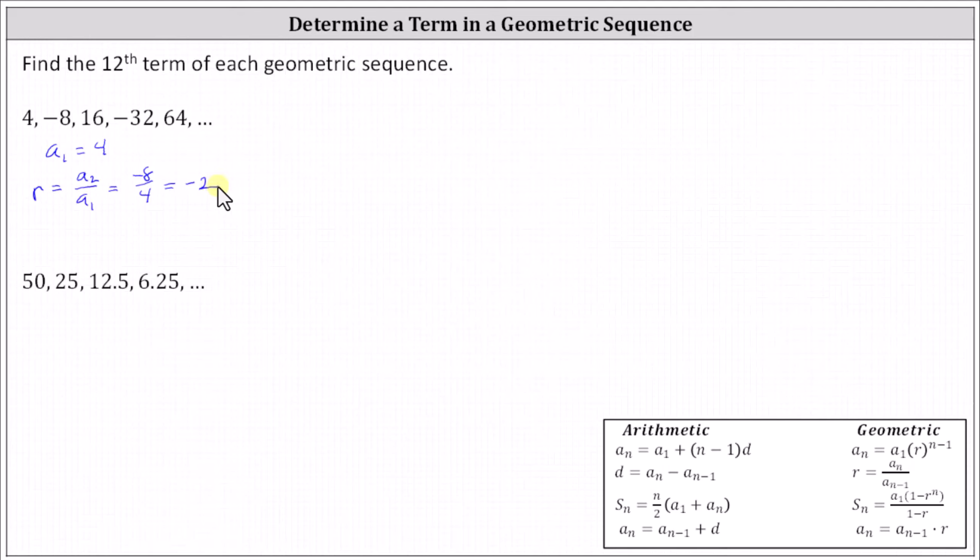And now we can write the formula for a sub n for a geometric sequence: a sub n equals a sub one times r to the power of n minus one. Now we can determine the twelfth term using this formula. When determining a sub 12, notice n equals 12. A sub 12 equals 4 times negative two raised to the power of 12 minus one, which is four times negative two raised to the 11th power.